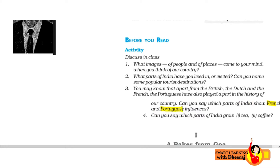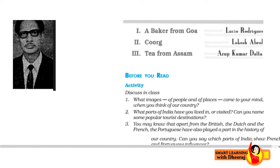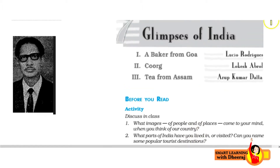Vohan pe un cheezon ki jhalak dekhne ko, uske culture ki jhalak dekhne ko humein milti hai. Can you say which parts of India grow tea and coffee? Ye saare questions inhi teeno parts se related hain jo humari story hai is chapter ki — Goa, Coorg, aur Assam mein alag-alag cultures ki glimpses humein dekhne ko milengi.